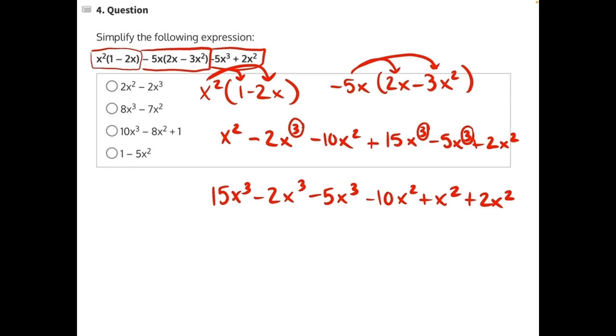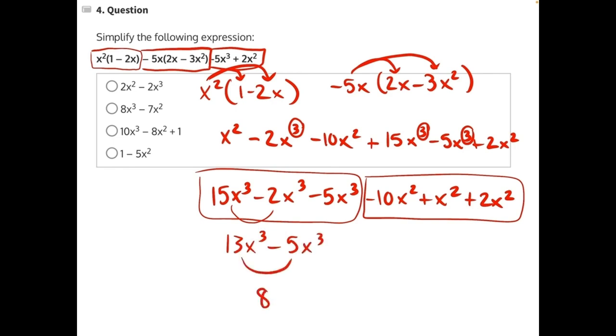Okay, so now we can combine our like terms. 15 minus 2 will give us 13x cubed minus 5x cubed. 13 minus 5 will give us 8x cubed.